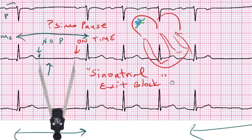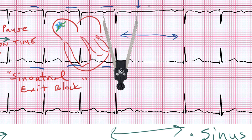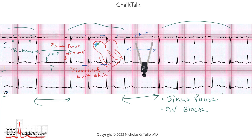Let's keep looking at this strip. There's another pause here, and if we take the P-to-P interval and move it over, we can see that where we would have expected a P wave, there is no P. But if we make a mark and move our calipers over, we can see the next P wave is pretty much on time. So at first glance it would appear to be a sinus pause, but it seems consistent with SA exit block. Following that, the sinus rhythm resumes and you have one-to-one conduction with just a first degree AV block.